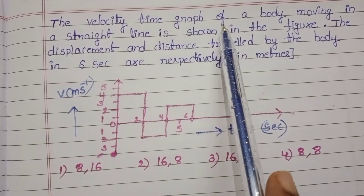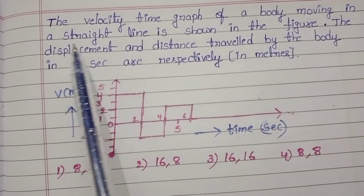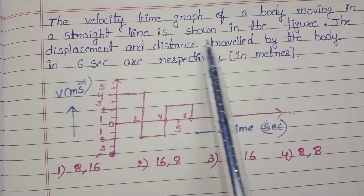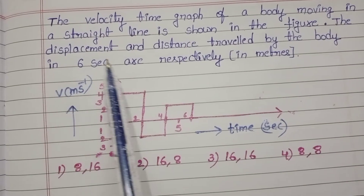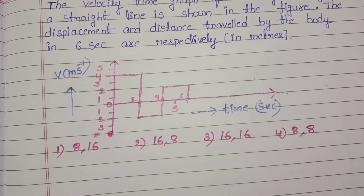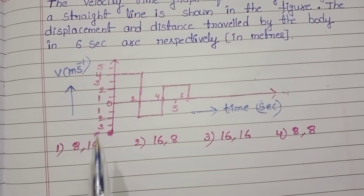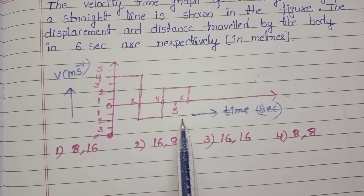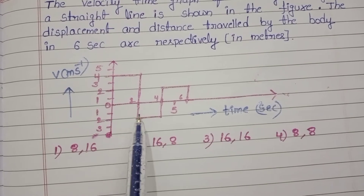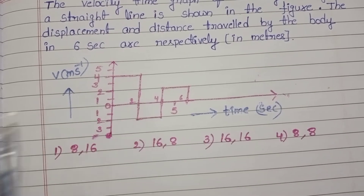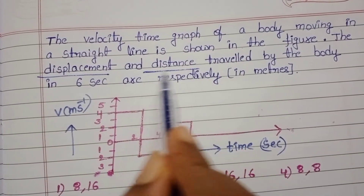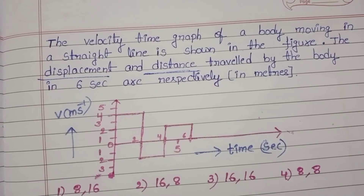The velocity-time graph of a body moving in a straight line is shown in the figure. The displacement and distance travelled by the body in 6 seconds are respectively to be found. We know the slope of a velocity-time graph gives acceleration, and the area of a velocity-time graph gives displacement. We want both displacement and distance travelled by the body in 6 seconds.